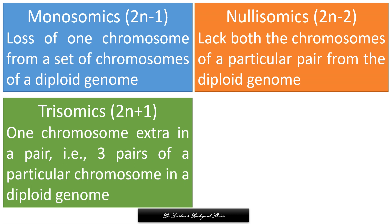Trisomics are represented as 2n+1. Trisomics have one chromosome extra in a pair, meaning 3 copies of a particular chromosome in a diploid organism. Such conditions arise by the fusion of gametes having n+1 and n number of chromosomes. The abnormal gametes arise due to non-disjunction.